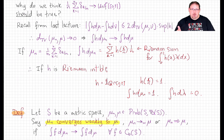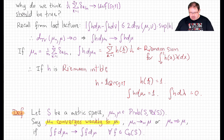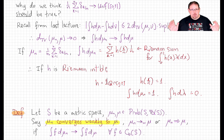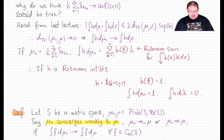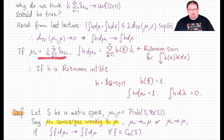If we were thinking functionally analytically, we would call this weak-star convergence, because it dualizes the convergence in this space by recognizing measures as the dual space. But we don't need that highfalutin terminology. This is our definition of weak convergence of probability measures, and it is the notion we will be working with for the next several weeks. We saw that this notion fixes our problem with the discrete approximation of the uniform measure.